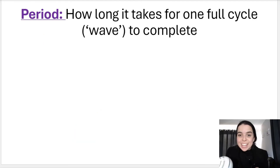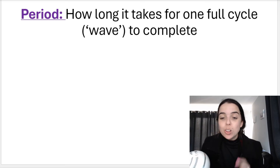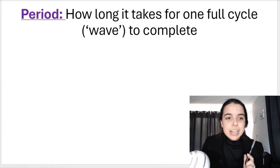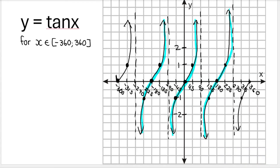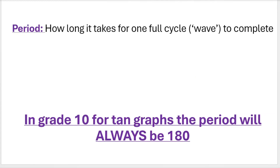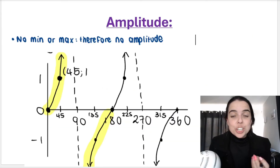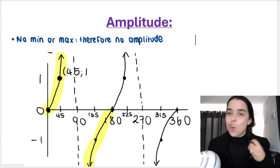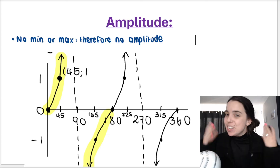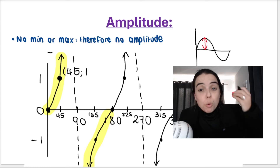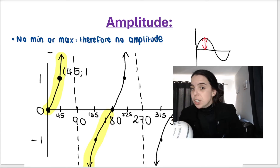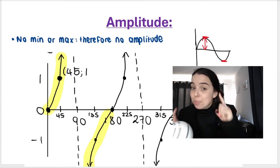The period is how long it takes for one full cycle of the wave to complete. You can see this pattern repeats itself every 180 degrees. So in grade 10, you can learn that for the tan graph the period will always be 180 degrees. As mentioned, for a tan graph there's no minimum and no maximum, so therefore there's no amplitude. Remember for the sin graph there was an amplitude because there was a maximum and a minimum.